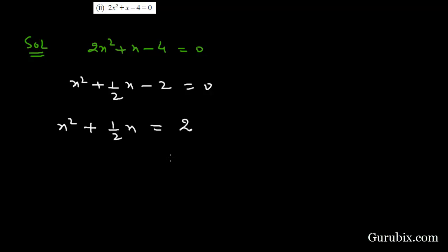Now we shall add to both sides the square of half of this coefficient (1/2). Half of 1/2 is 1/4, and we shall add the square of 1/4 to both sides.